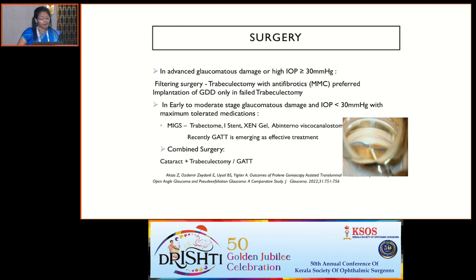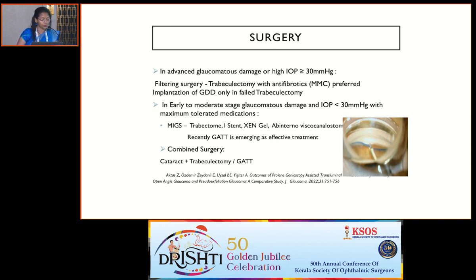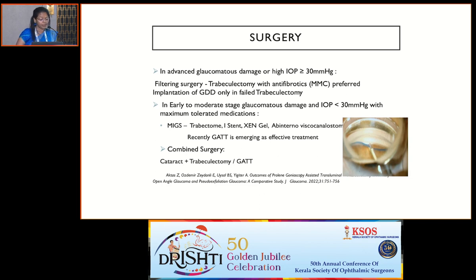Regarding surgery: in advanced glaucoma with high IOP greater than 30, filtering surgery — especially trabeculectomy with anti-fibrotics — is preferred. Implantation of drainage devices is reserved for failed cases, with limited studies available. In early to moderate stage glaucoma with IOP less than 30 controlled on maximum medical therapy, minimally invasive glaucoma surgeries have a role, with GATT emerging as an effective option. Combined surgery — cataract with trabeculectomy or combined with GATT — is another option, though we have limited studies in pseudo-exfoliation.